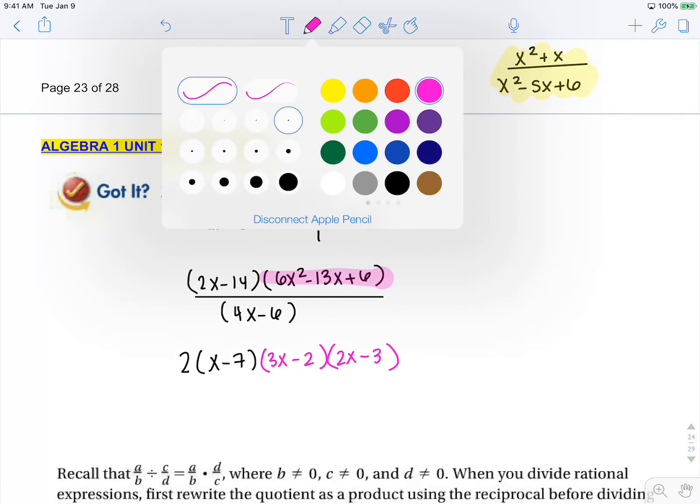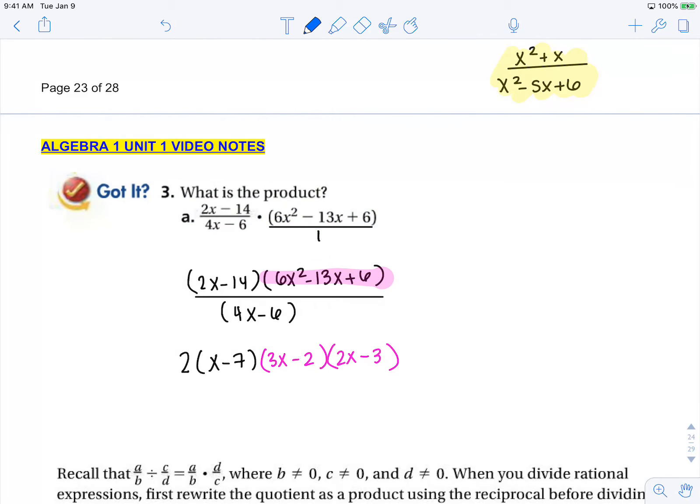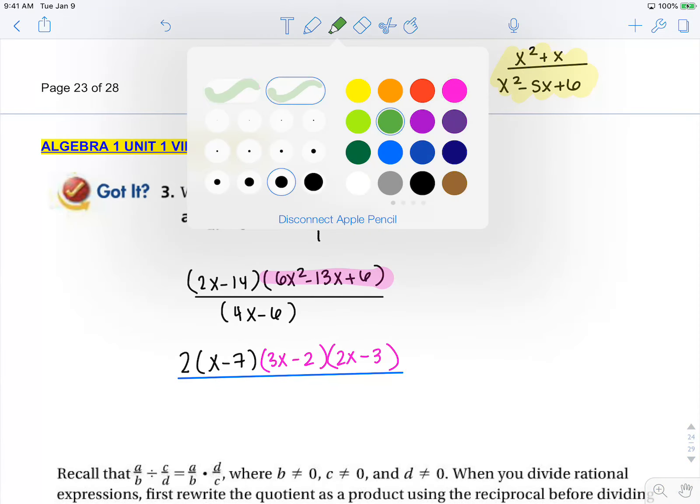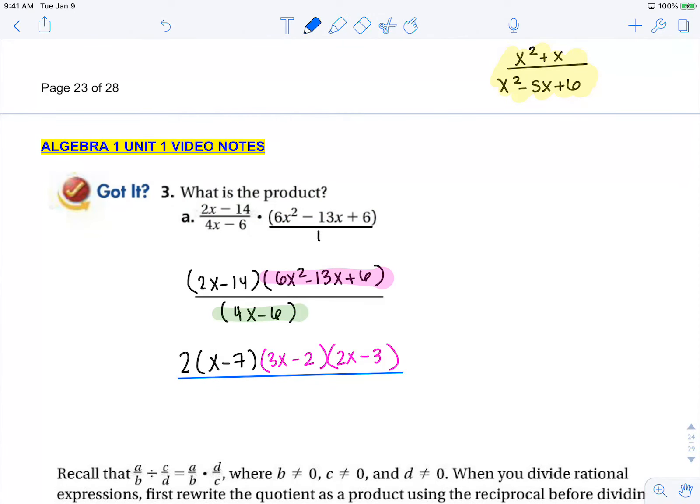And now I need to factor my denominator, 4x minus 6. It has a GCF of 2, and that leaves 2x minus 3.